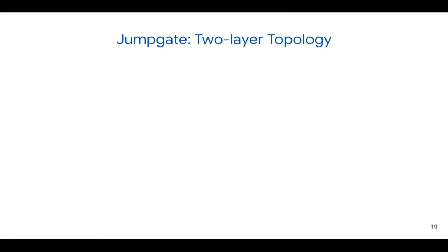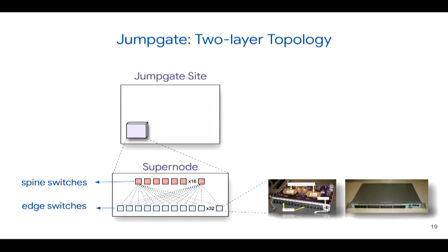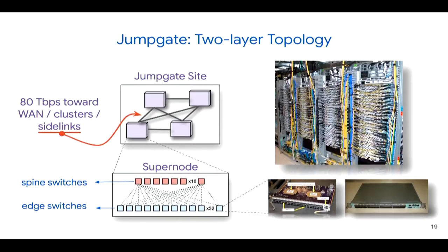To solve this, we came up with a new topology called Jump Gate, which is a two-layer hierarchy. At the bottom layer, we form a logical topology—think of it as a logical router—called a super node. This is built using a two-layer Clos network using off-the-shelf merchant silicon switch chips. On top of that, we build Jump Gate site fabrics using super nodes as building blocks, and we form full-mesh connectivity between super nodes within the same site. In the newer generation of Jump Gate fabric, the site fabric can support up to 80 terabits per second, and this capacity can be flexibly allocated among WAN clusters and side links.